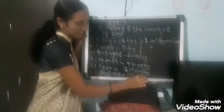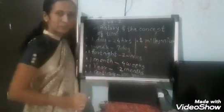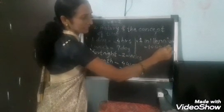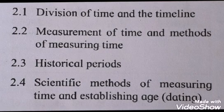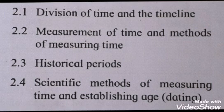One millennium means 1000 years. Students, open your EVS 2 History textbook and go to page number six. In this lesson we are going to learn: first, division of time and the timeline; second, measurement of time and methods of measuring time; third, historical periods; and fourth, scientific methods of measuring time and establishing age, that is dating.